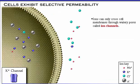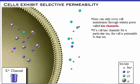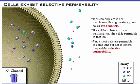Ions are not soluble in the lipid bilayer. They can only cross cell membranes by passing through watery pores called ion channels. If a cell has channels for a particular ion, we say it is permeable to that ion. Since most cells are permeable to some ions but not to others, they exhibit selective permeability.